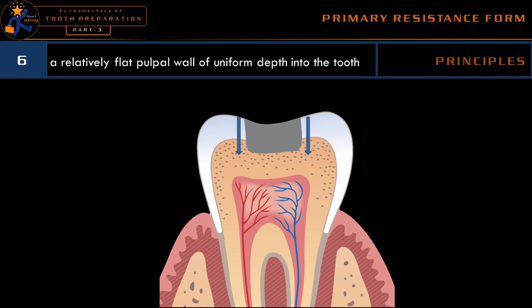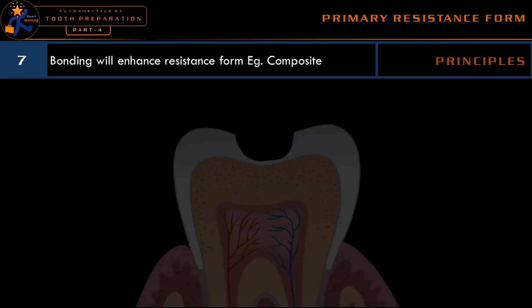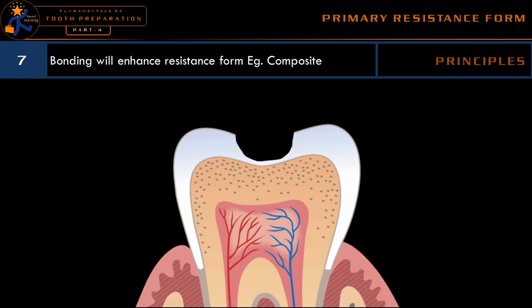As we have seen in the definition, both the tooth and the restoration should be strong. The sixth principle is to provide a relatively flat pulpal wall of uniform depth into the tooth. Looking at the mesial and distal sides, they should have equal depth — for example, if the mesial depth of cavity preparation is 2.5 millimeters, distally it should also be 2.5 millimeters. If we do not provide that, forces will not be directed perpendicular to the long axis, leading to forces tilting or diverting toward one wall more than the other, causing fracture of the tooth.